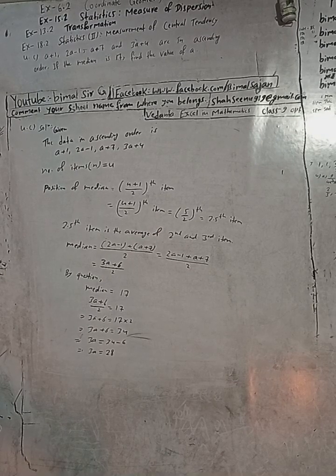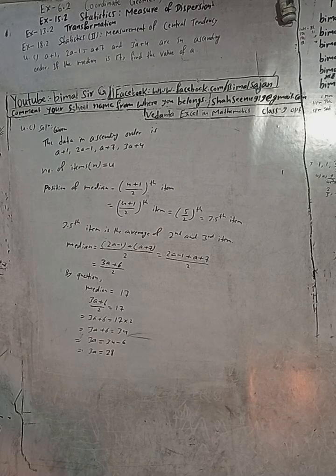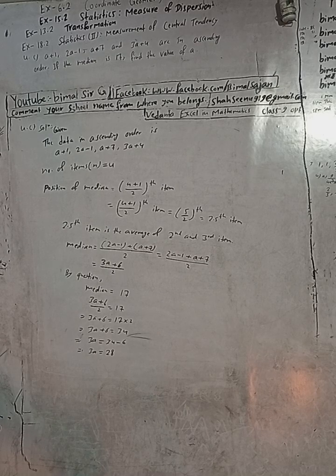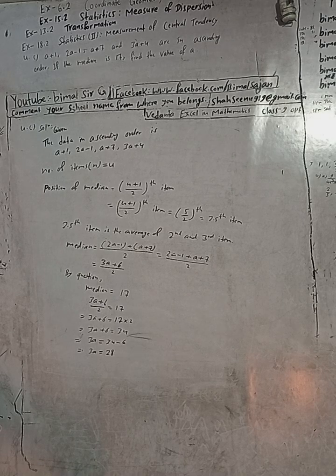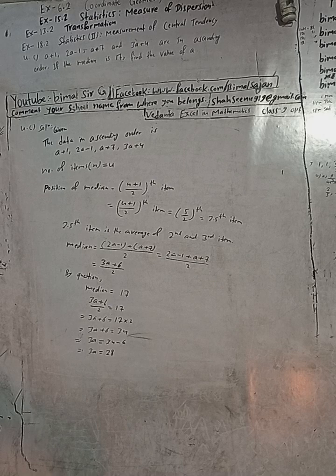This appears to be a mistake in the Pranabhook (textbook). If the median is 17, something seems off. I believe the question may be wrong in the book.